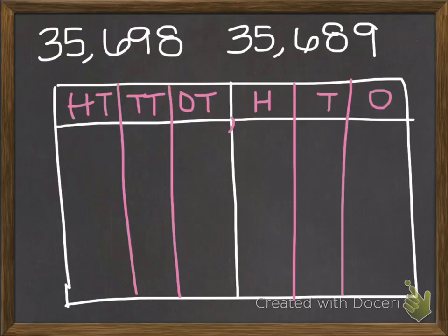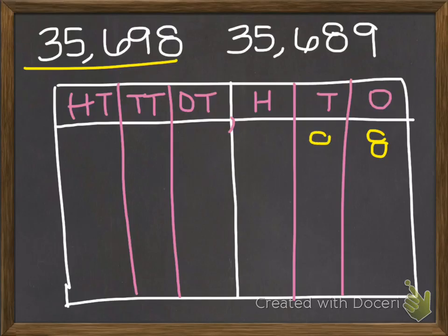Now the only work I have left to do are two things. First, I need to put the numbers in the chart. I'm going to start with this number here, beginning with the ones place to make sure I have it lined up. So the eight goes in the ones place, the nine in the tens, six goes in the hundreds, five is in the one thousands, and three is in the ten thousands.